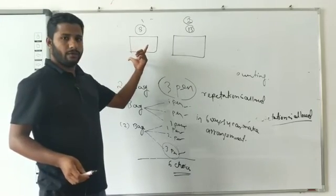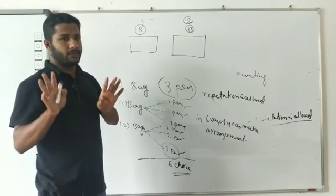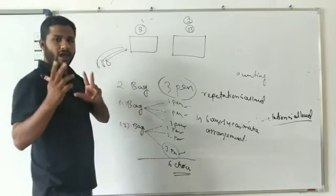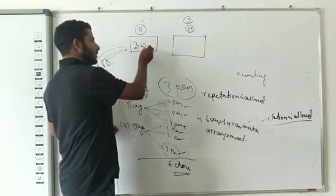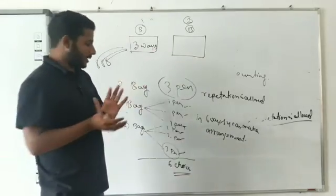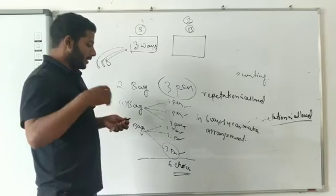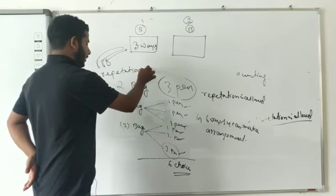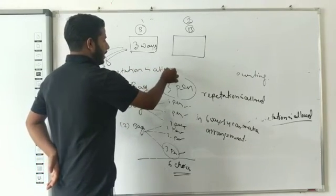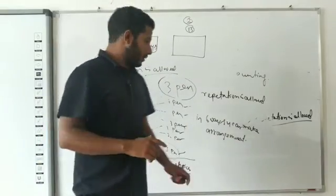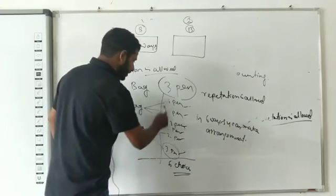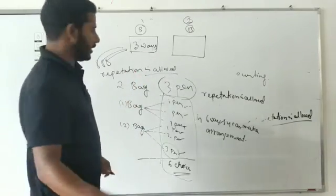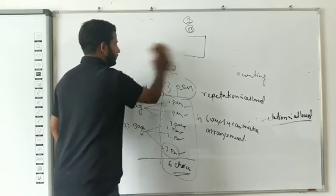Out of three pens, anyone may come for each position — three choices means three ways. Since repetition is allowed, the second position also has three ways. So we use the Fundamental Principle of Counting to find the total number of arrangements by multiplying.